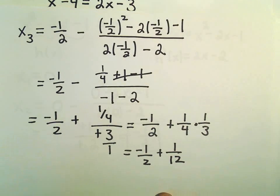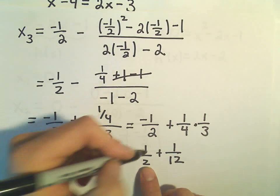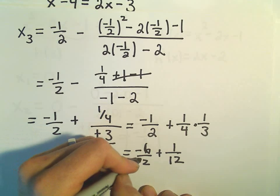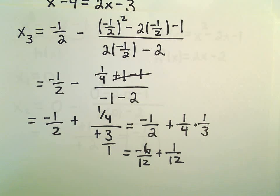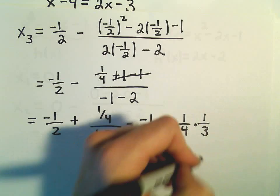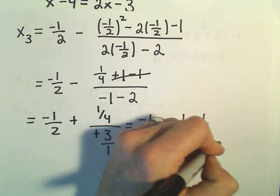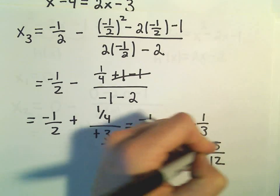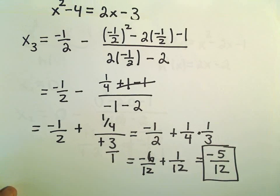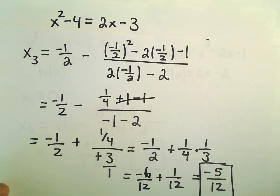We could multiply top and bottom of our first fraction by 6. That would give us 6 over 12 if we get common denominators. And when we combine those, it looks like we would get negative 5 over 12. And that would be our second approximation.